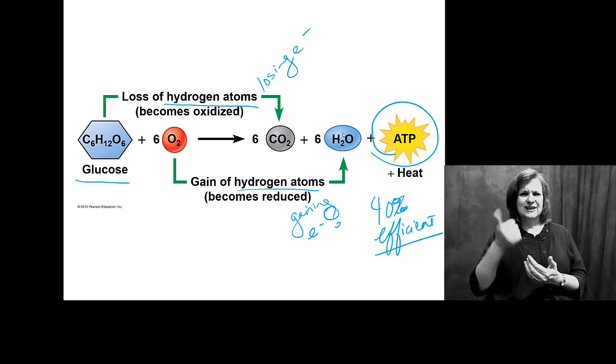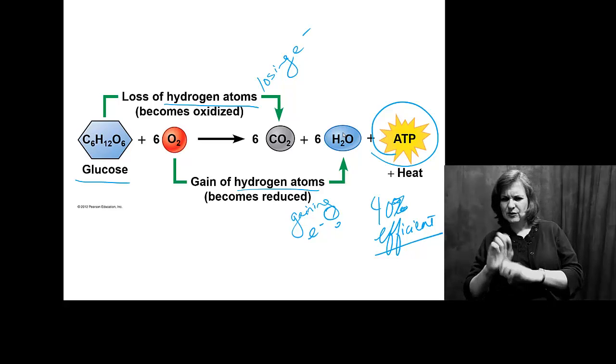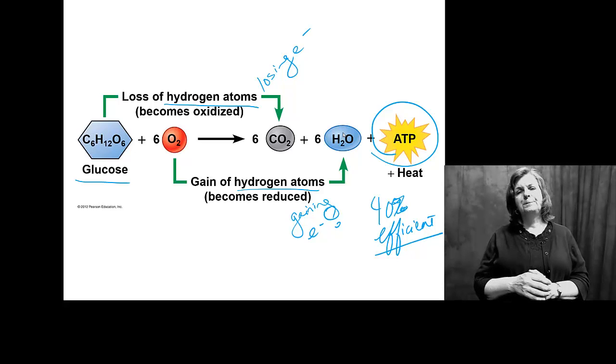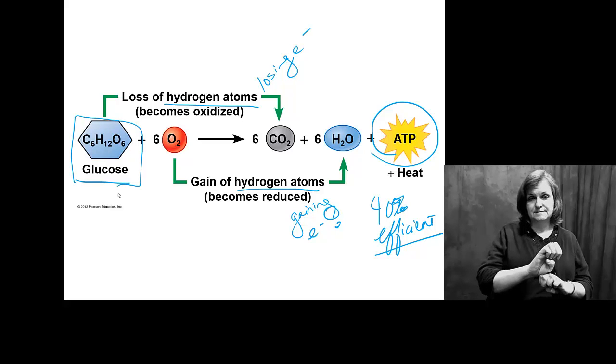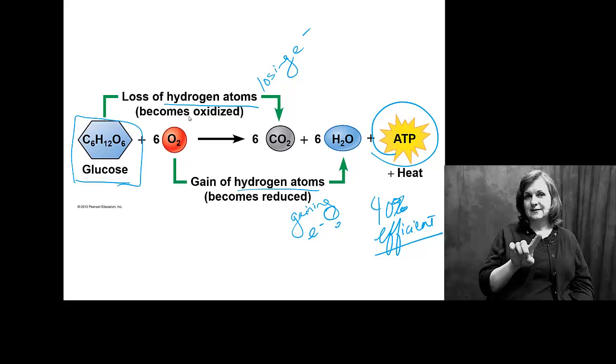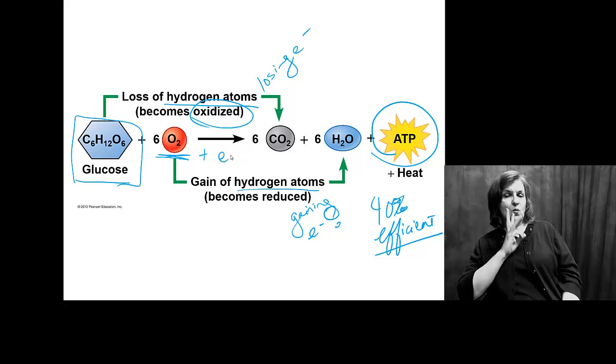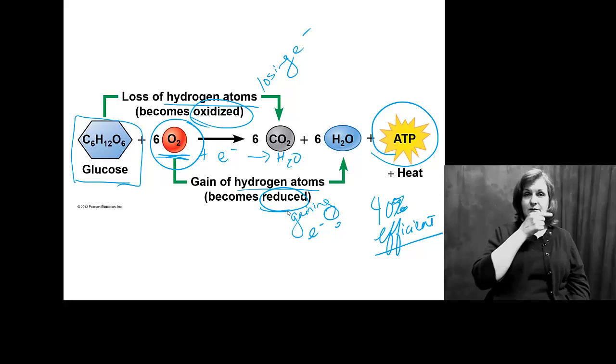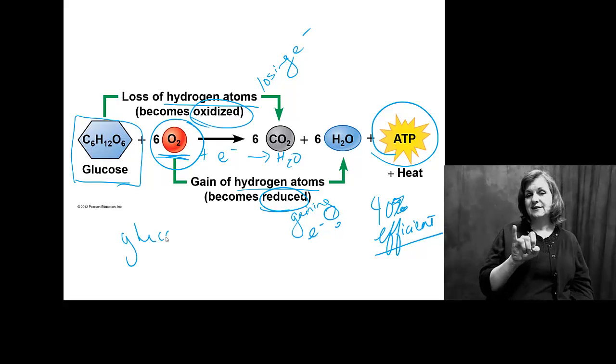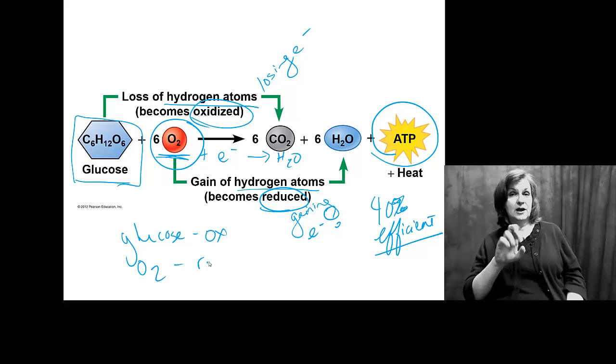So we look at, it's easier to look for where hydrogens have moved to, than it is to look at where electrons have moved to in these kind of reactions. So if glucose is losing electrons, it's oxidized, right? And if oxygen is gaining electrons to give us water, oxygen is actually reduced. So glucose oxidized, oxygen reduced.